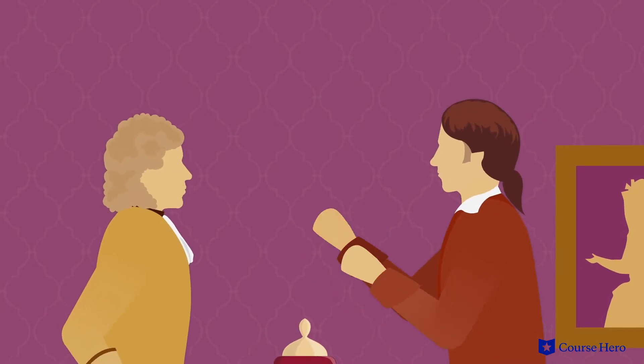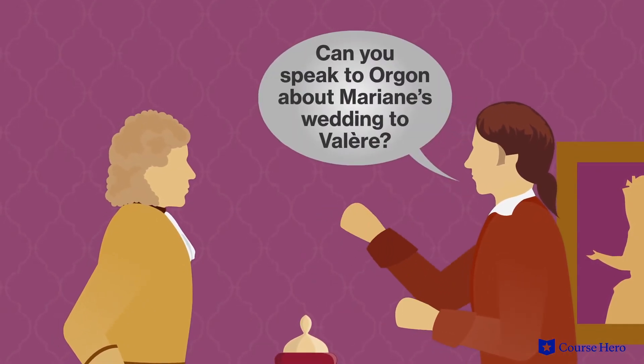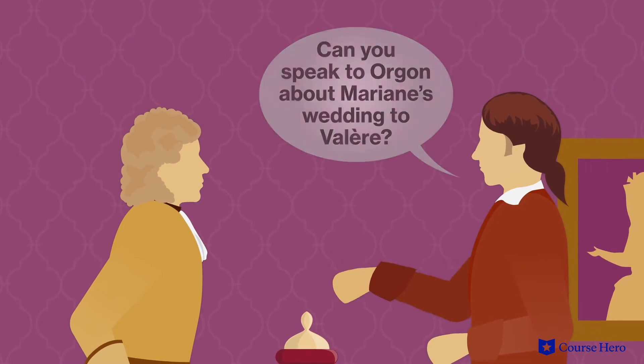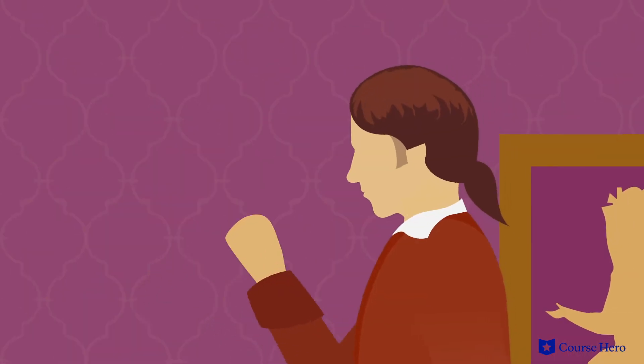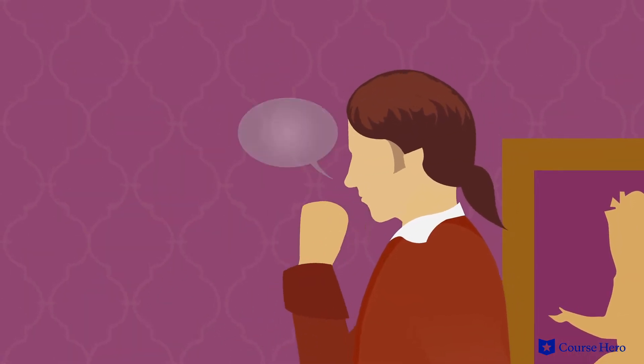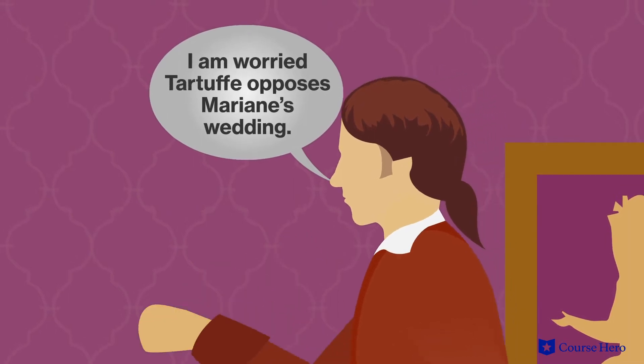Cléant has time to say hello to Orgogne and then has to leave. Damis asks Cléant to speak to Orgogne about Marianne's wedding to Valère. He wants the wedding to go ahead since he wants to marry Valère's sister, but he's worried Tartuffe opposes Marianne's wedding.